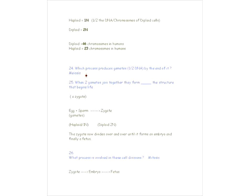You actually have four cells produced during meiosis from one parent cell. Question 25: when two gametes join together they form the structure that begins life — a zygote. You can see that egg and sperm are haploid or 1N, and the zygote is diploid or 2N. The zygote divides over and over again until it forms the embryo and finally the fetus. The cell divisions from zygote to fetus involve mitosis.